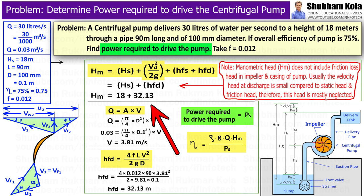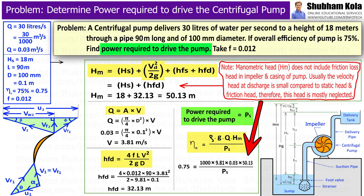And with this calculated value of hf, the manometric head Hm we got as 50.13 metre. Therefore, by putting this value in overall efficiency equation, we will calculate power required to drive the centrifugal pump as 19.67 kW.